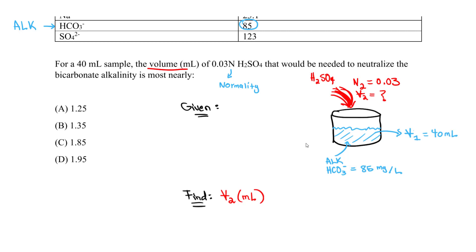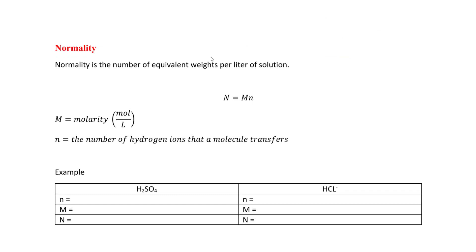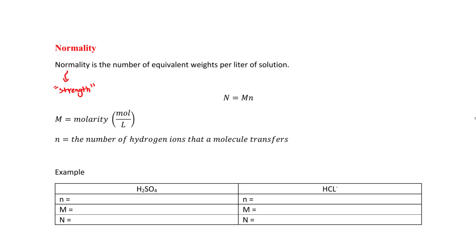First, we need to understand normality. Normality is the number of equivalent weights per liter of solution. You can think of it as the strength of the solution. The formula is: capital N (normality) = M × n, where M is the molarity in moles per liter, and lowercase n is the number of hydrogen ions that a molecule transfers in the reaction.